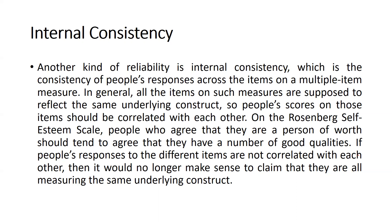The correlation should be greater than 0.8. Then we can say there is internal consistency, which is the consistency of people's responses across the items on a multiple-item measure. In general, all the items on such a measure are supposed to reflect the same underlying construct, so people's scores on those items should be correlated with each other. If there is no correlation, that means they are not able to define that construct. People who agree that they are a person of worth would tend to agree that they have a number of good qualities.